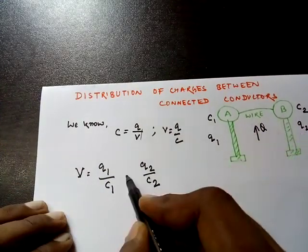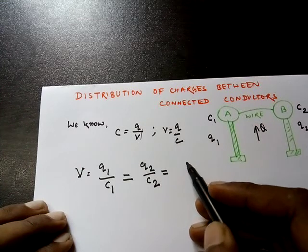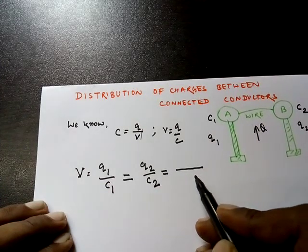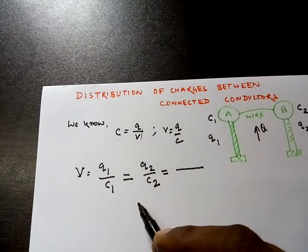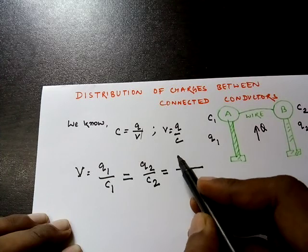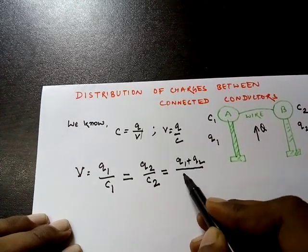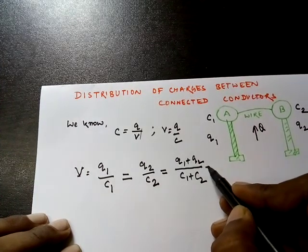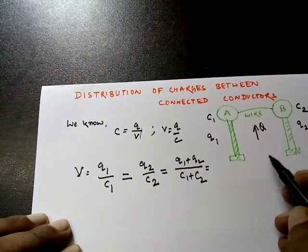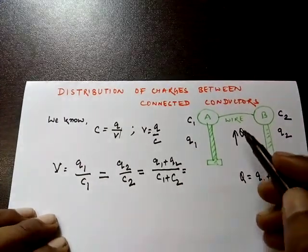Since both expressions equal the common potential V, they are equal to each other. Using the algebraic property that equal fractions can be combined by adding numerators and denominators, we get V = (Q1 + Q2) / (C1 + C2). Now, Q1 + Q2 must equal the total charge Q given, because charge is conserved — charge is not lost.